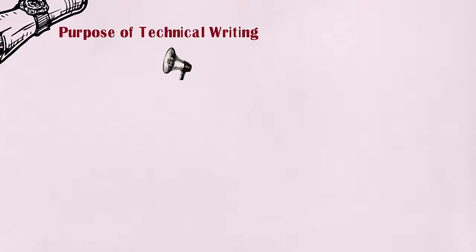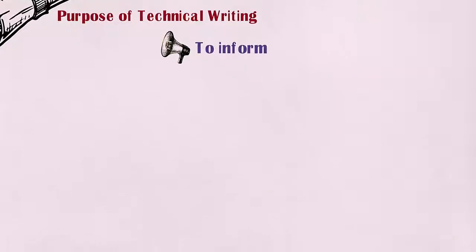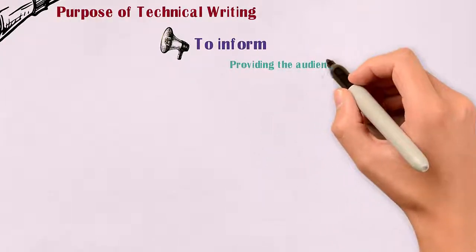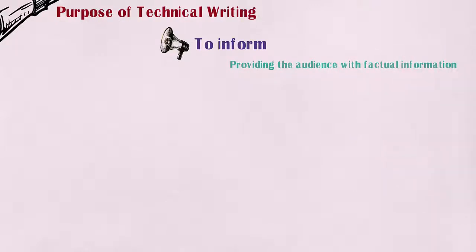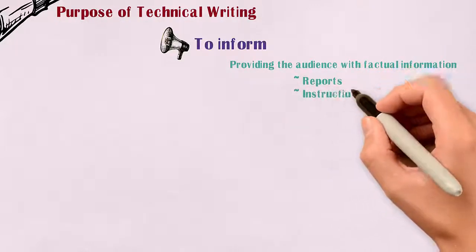The first purpose of technical writing is to inform. It provides the audience with factual information in the form of reports, instructions, or descriptions.